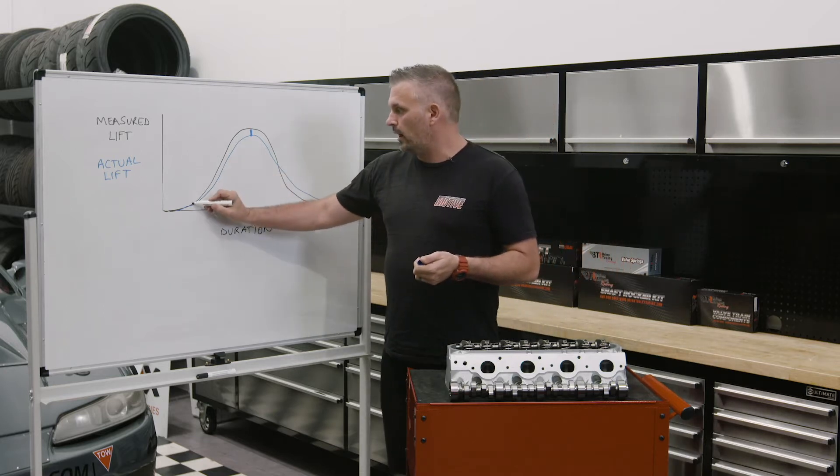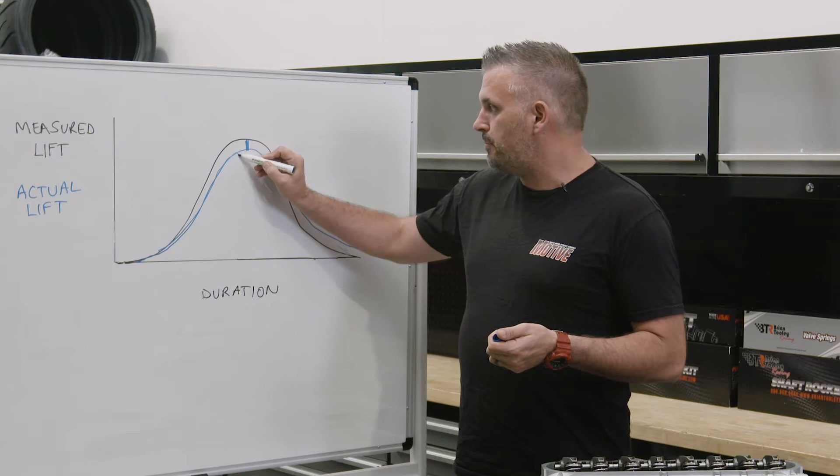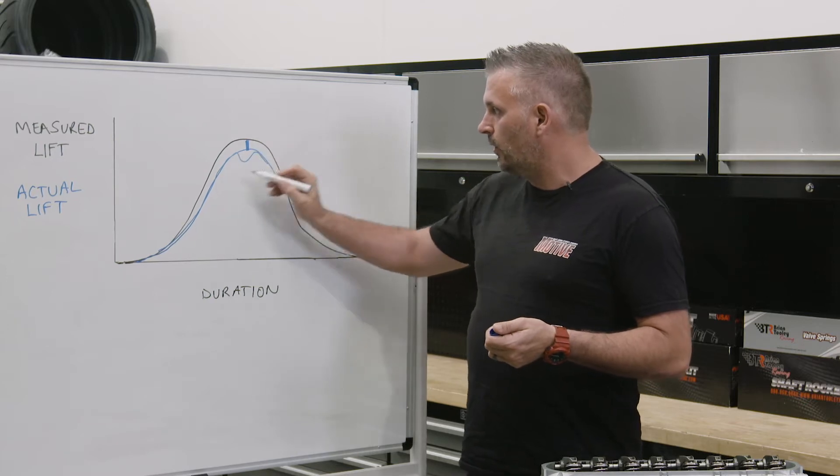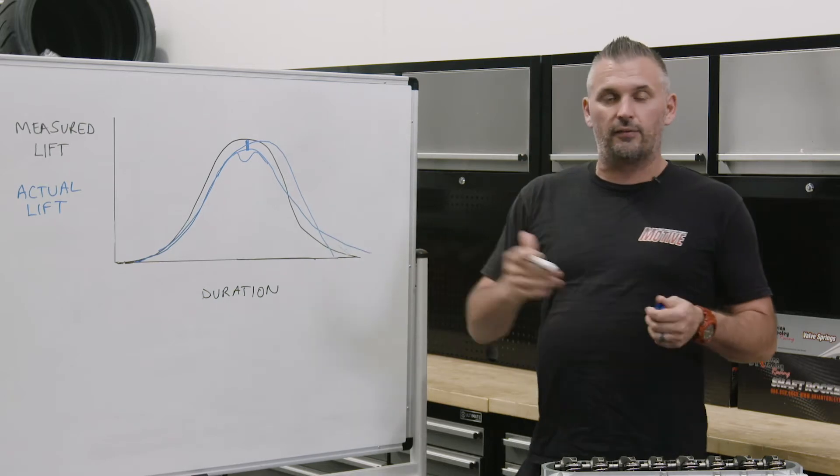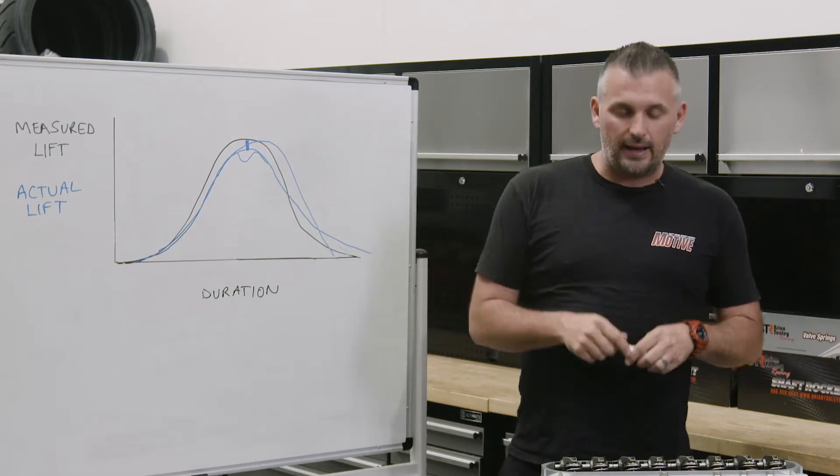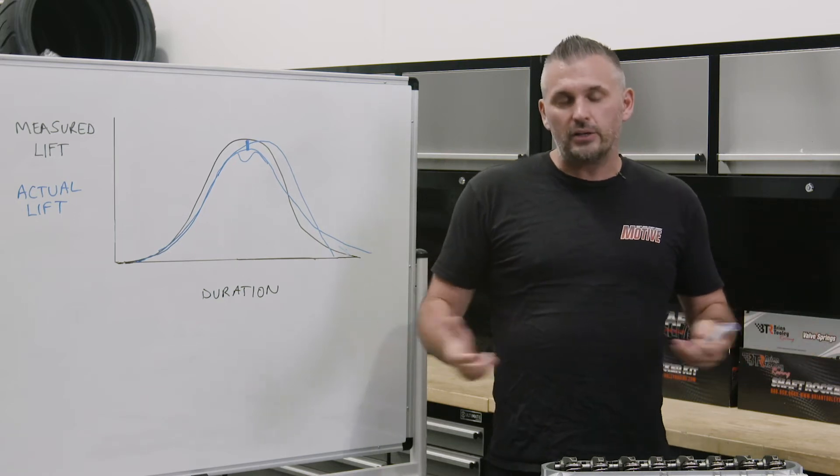All this bending and deflection can also lead to valvetrain instability. Valvetrain instability is where it comes up, but then it might bounce because of the stored energy. Or it can even loft off the top and come down too far down and aggressively have the valve hit back against the rocker. And you have all sorts of problems and breakages.